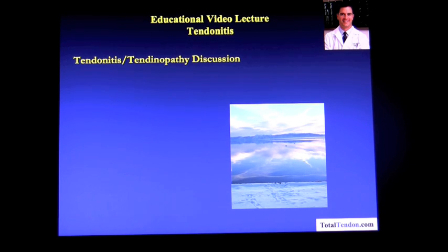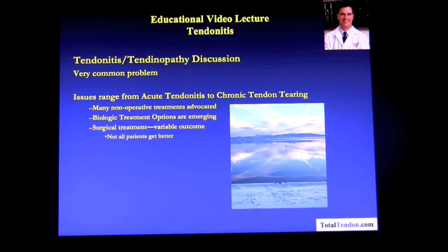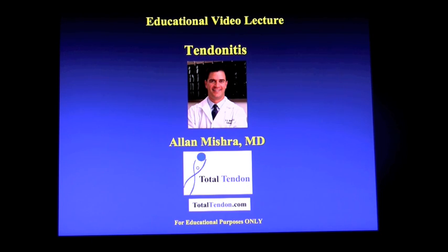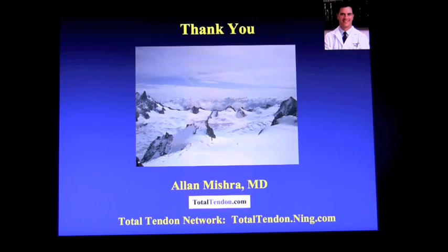In summary, tendinitis or tendinopathy is a very common problem. Issues range from acute tendinitis to chronic tendon tearing. Many non-operative treatments have been advocated, biologic treatments are emerging, and surgical treatment can be effective, but its outcome is variable. Thank you for your attention, and please visit us at totaltendon.com for further information, or join the Total Tendon Network at totaltendon.ning.com. Thank you very much.